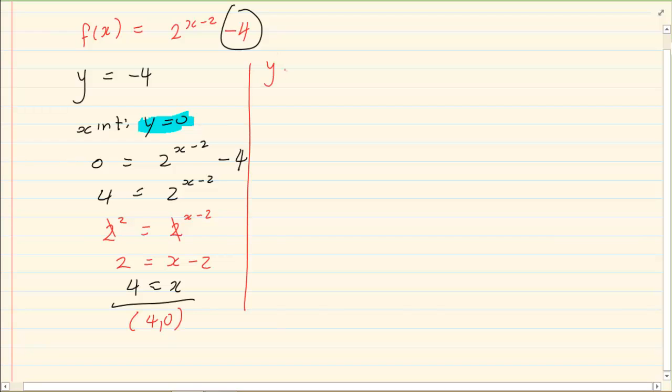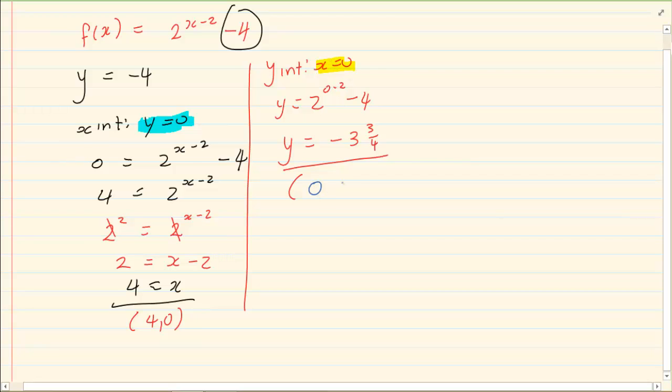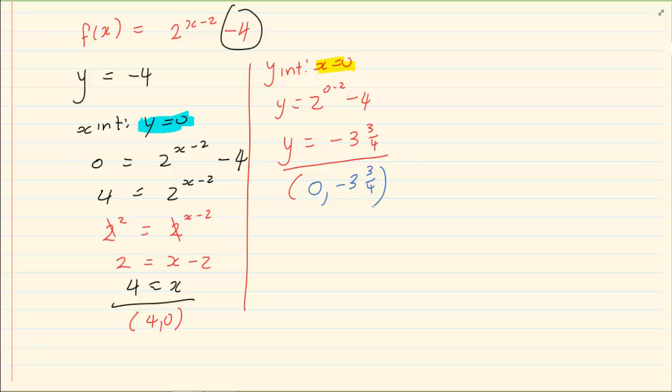Then we are going to do the y intercept. y intercept x is equal to 0. So I have y is equal to 2, 0 minus 2, minus 4. So we have y is equal to minus 3 and 3 over 4. My coordinate is x is equal to 0 and y is minus 3 and 3 over 4. You can write it as a decimal if that is easier for you to draw. You can write 0 and minus 3 comma 75.